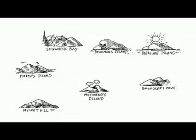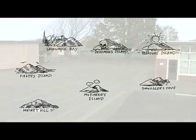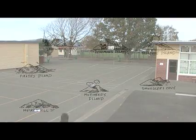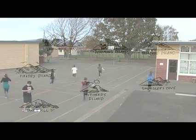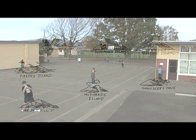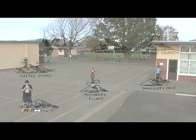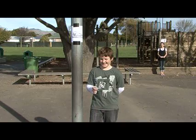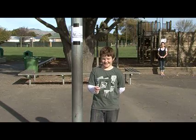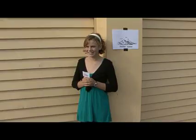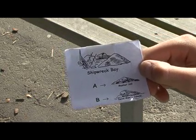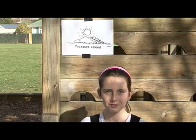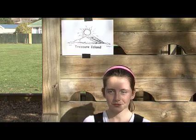In this activity, there are seven islands controlled by pirates. The islands are spread around the playground. A student at each island provides a choice of two ships to take you to another island. The goal is to find a way to Treasure Island.